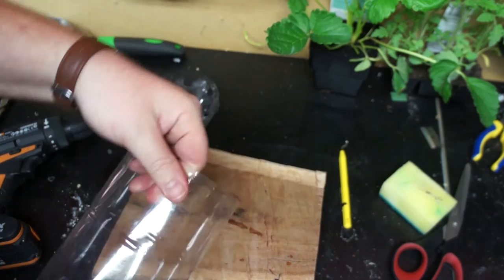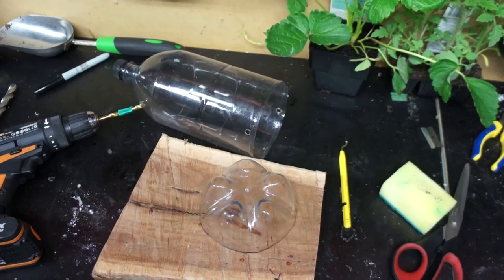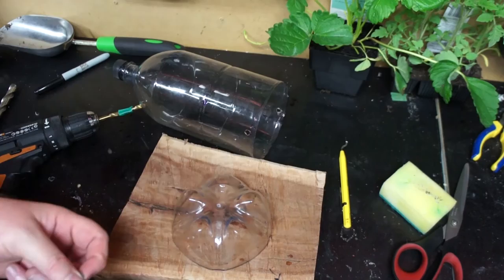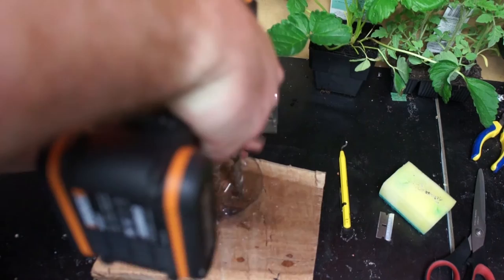Now we're also just going to drill some holes in the feet of the soda bottle. This is the low point once this is inverted, and that's where the water is going to flow through into the soil when we water it from the top of the hanging planter.